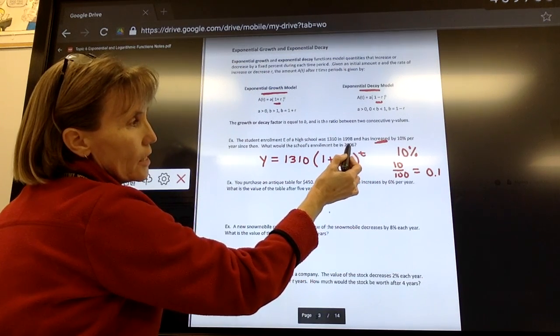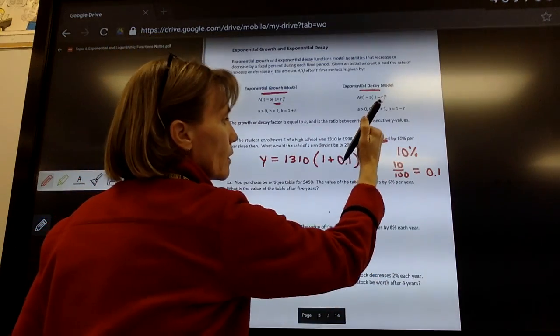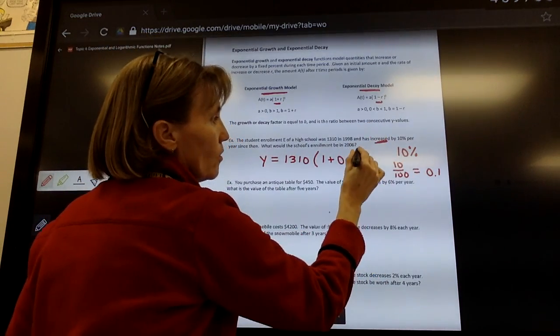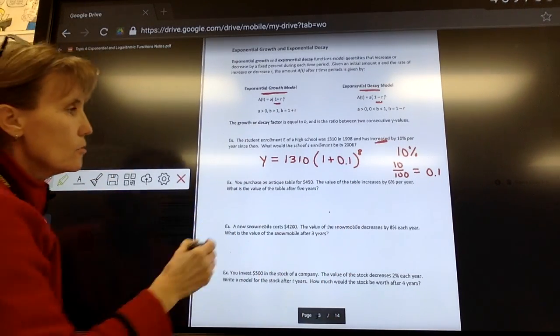In this case, we're going to go from 1998 to 2006. So how many years would that be? That would be a total of eight years. So that would be the model, that would be the growth model that I would be using.